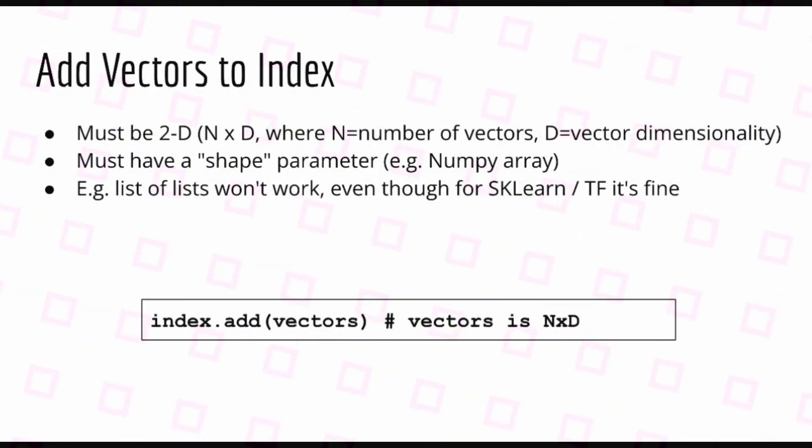The next step is to add the vectors you want to search at a later time. This can be done by calling the add function. Note that there are some restrictions to the type of data that you can pass in. For example, you must pass in a two-dimensional array of shape N by D, where N is the number of vectors and D is the vector dimensionality. The object you pass in must have the shape parameter, since this will be called by the library. So, for example, you cannot pass in a list of lists, even though that would work with libraries like Scikit-learn and TensorFlow.